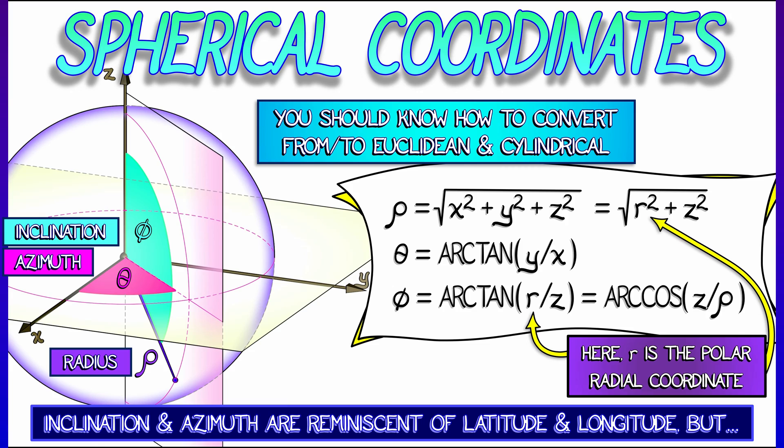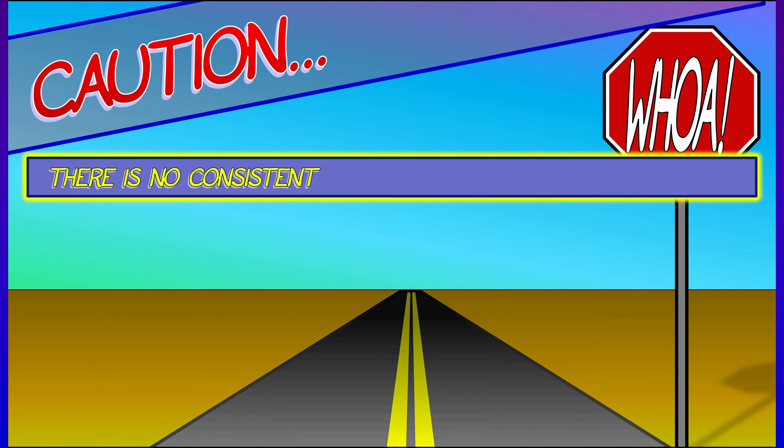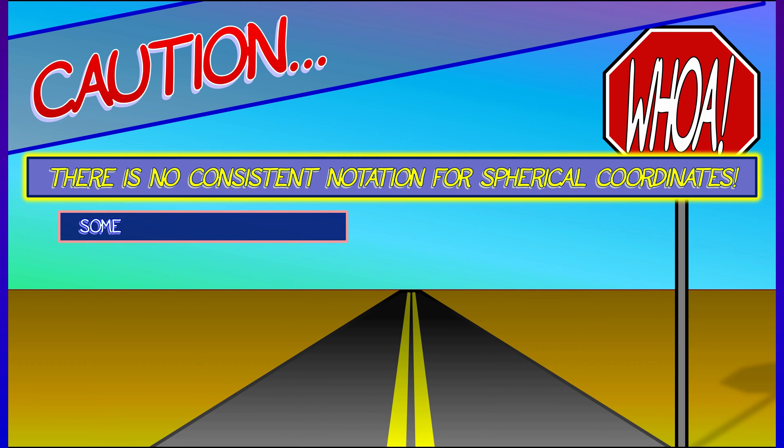But the thing you have to remember is that even though inclination and azimuth are like latitude and longitude, they're not exactly the same. And you have to be careful. There is no consistent notation for spherical coordinates. People mix it up all the time.